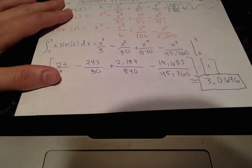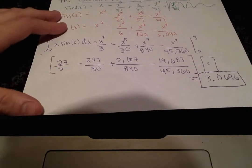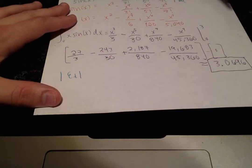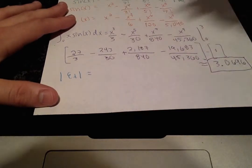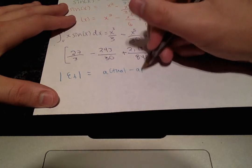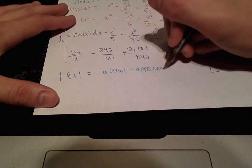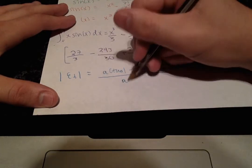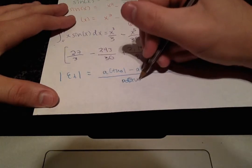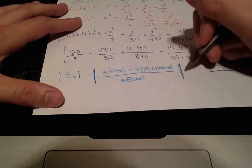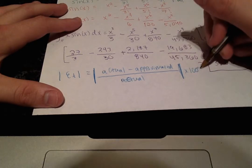which can be written like this. So what is that equal to? The absolute relative true error is equal to our actual value minus our approximated value divided by our actual value, the absolute value of all of that times 100%.